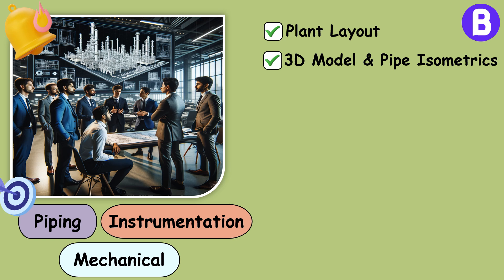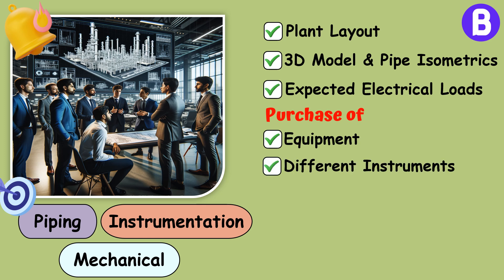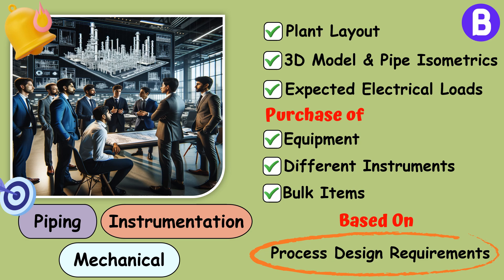Such activities include plant layout, 3D model and pipe isometrics creation based on the P&ID, consideration of the expected electrical loads needed by the plant, purchase of equipment based on our sizing, purchase of different instruments based on the process data in hand, purchase of bulk items such as piping, valves, and fittings, and even more other activities. All of them shall be based on process design requirements.